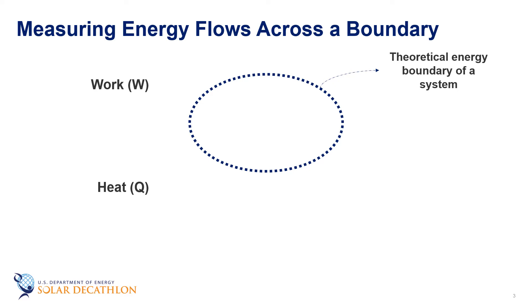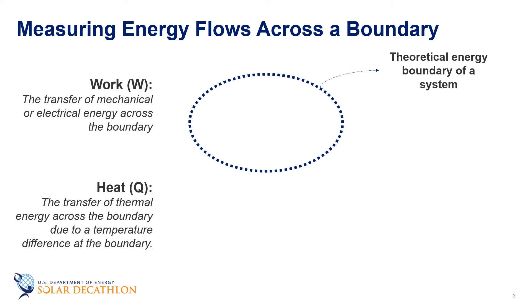From the building science point of view, heat is the transfer of thermal energy across the boundary because of a temperature difference at the boundary, and work is the transfer of mechanical or electrical energy across the boundary. So a power line crossing the boundary into a building is considered electrical work entering the building. Energy being lost from a warm building in the winter to the cold surroundings is heat.